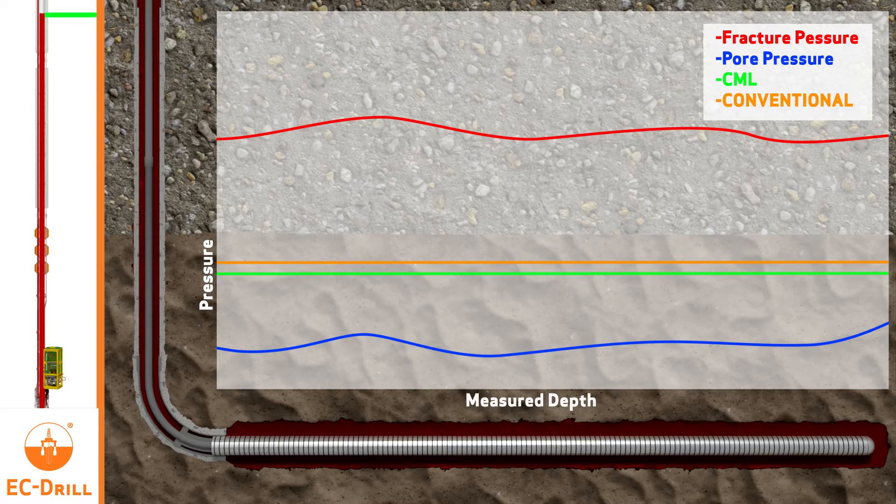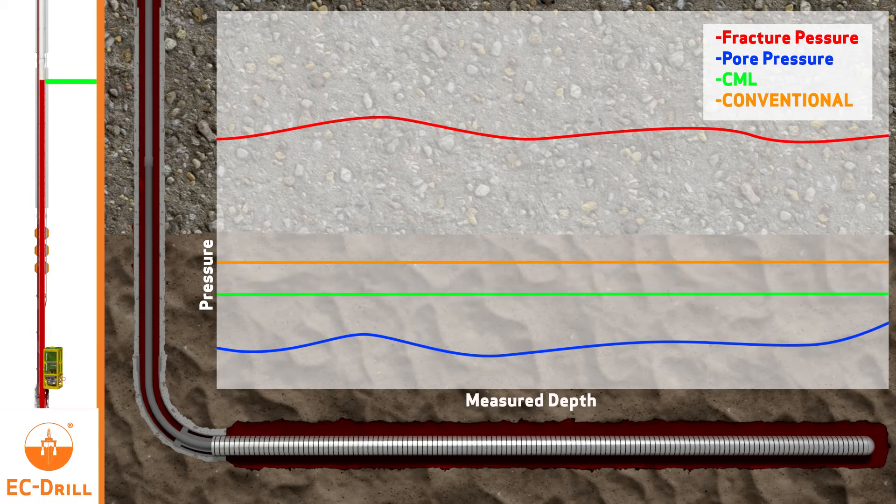Controlled mud level can enable using the preferred completion fluid by reducing the static pressures compared to conventional profiles. The preferred completion fluid can minimize impact on the reservoir.